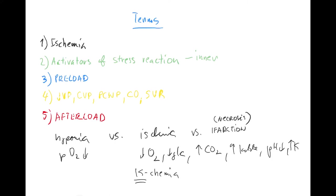When a certain region dies — necrosis is the major mechanism, though apoptosis occurs too — then you call it infarction. You can have infarction of the heart, brain, liver, or muscles. In normal usage, 'infarction' usually implies heart, but that's not correct — one should say myocardial infarction. Stroke is brain infarction, though there's also a hemorrhagic type.